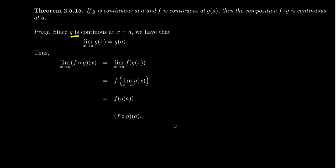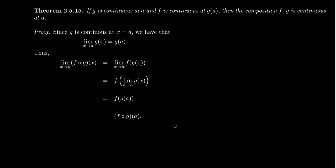Since g is continuous at x equals a, the limit of g of x as x approaches a is g of a — that's what continuity is all about. So if you take the limit of f of g of x as x approaches a, since f is a continuous function, by the previous result you can factor it out. Then you compute the limit of g, which by continuity equals g of a. So f of g of a is just f composed with g evaluated at a, confirming the composition of two continuous functions is itself continuous.